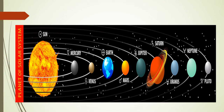So what is solar system? Our solar system consists of a star. We call that star as sun and planets. Those planets are Mercury, Venus, Earth, Mars, Jupiter, Saturn, Uranus, Neptune and Pluto.